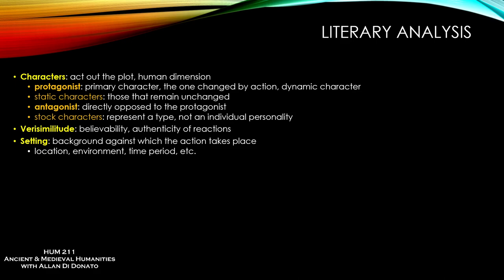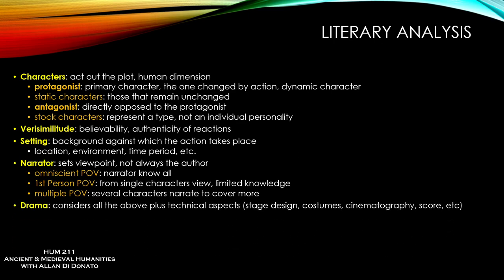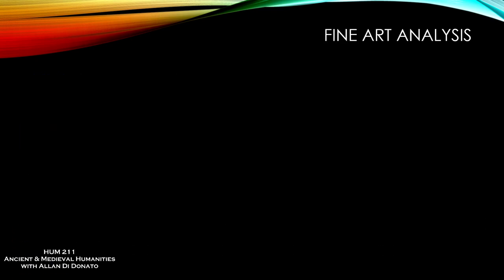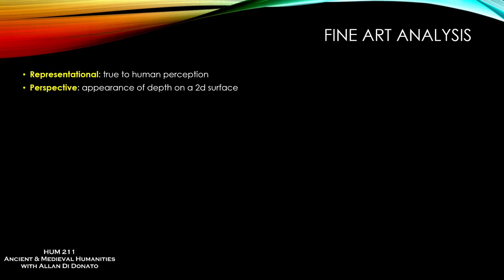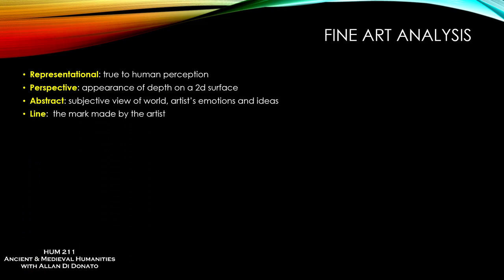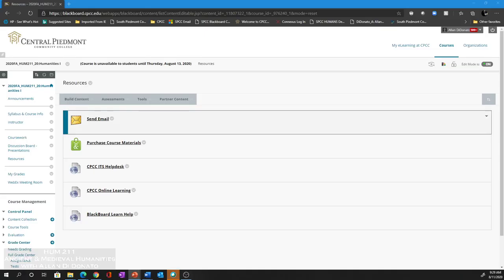By verisimilitude I don't necessarily mean is it absent of fantastic elements. For instance, if you've ever watched Lord of the Rings — a wonderful movie, I'm a huge Tolkien fan — you've got wizardry, monsters, orcs, and things that are not believable. But when I say does the story have verisimilitude, I'm talking about the authenticity and reaction of the characters. How relatable are they? How much like real human beings are they? In a certain way, I think Tolkien has a lot of verisimilitude. Then there are also terms for fine art analysis — like what's the difference between representational and abstract art, what is perspective, line, color, composition, setting, et cetera.